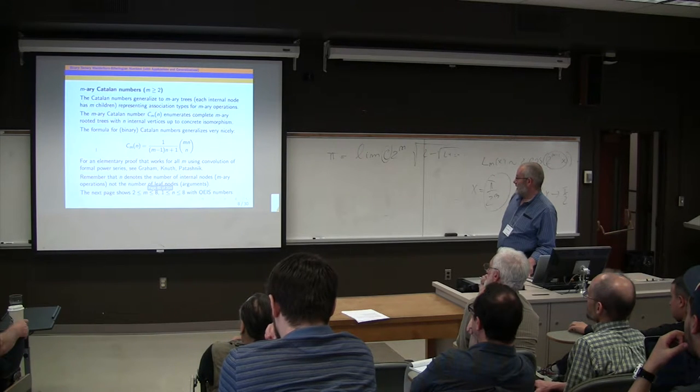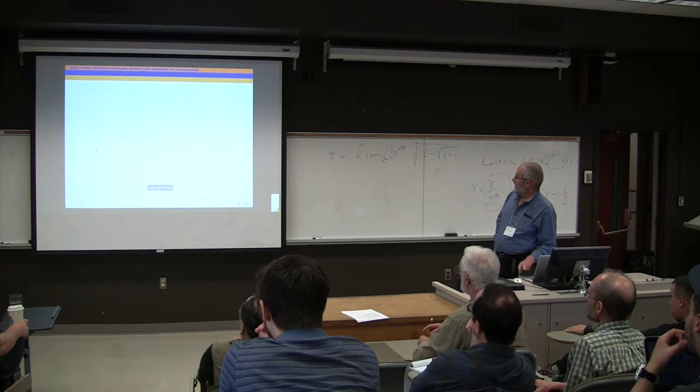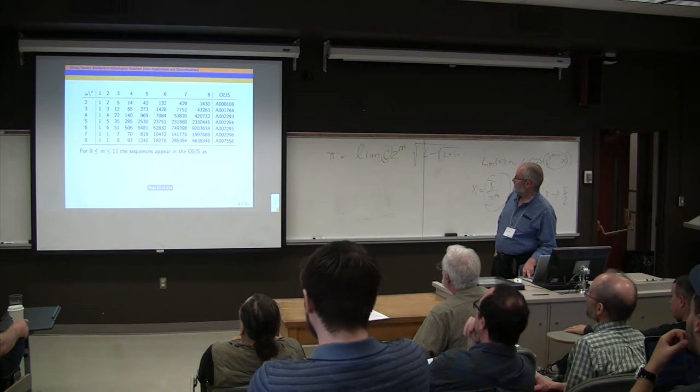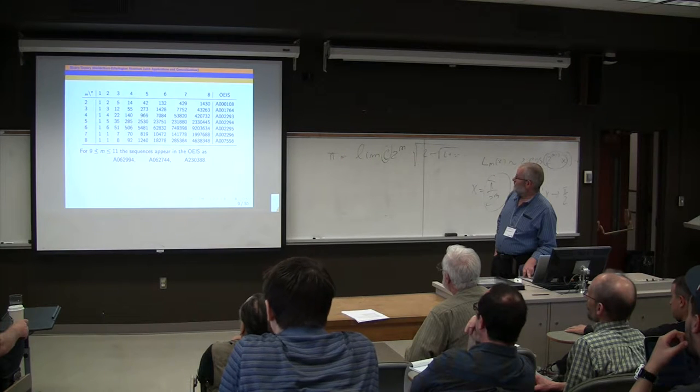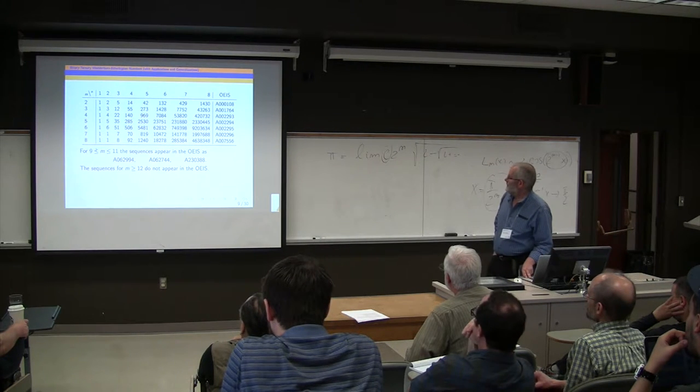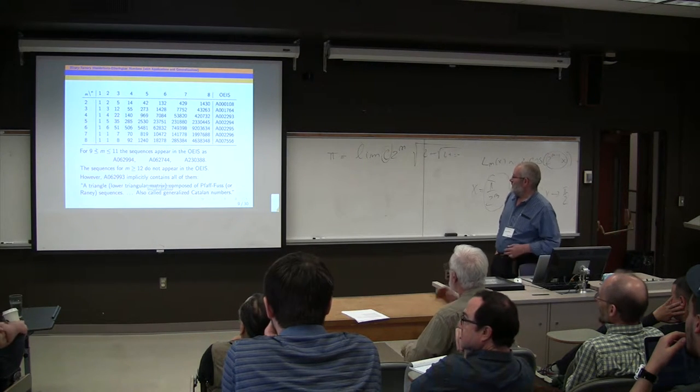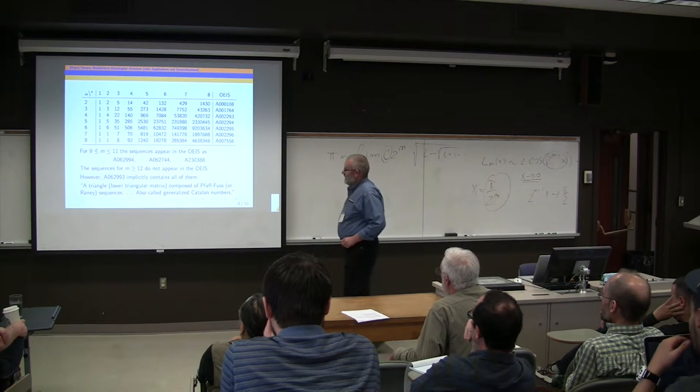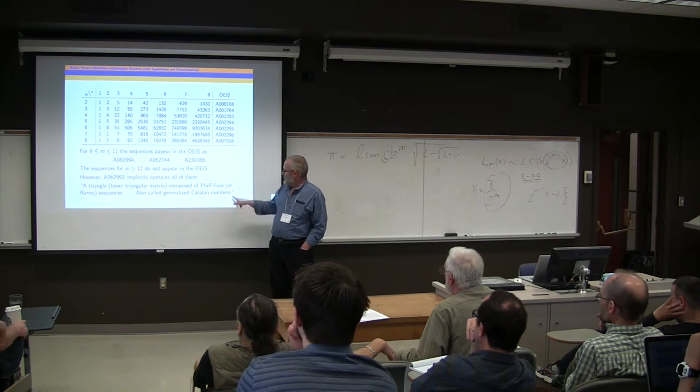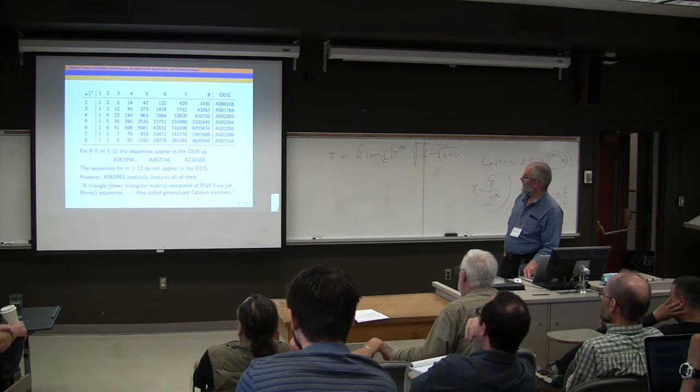And you've got the formula. There's a nice proof of this in the book, the concrete mathematics book by Graham, Knuth, and Patashnik. And just a reminder again, at this point n is the number of internal nodes. And these sequences are, a lot of them are in the online encyclopedia, even up to m equals 11. Starting at 12, they're not there. So maybe I'll get around to putting them there. But implicitly there is one sequence that contains all of these sequences, 62993. It's a flattened triangle composed of the Fuss or Raney sequences, also called generalized Catalan numbers.